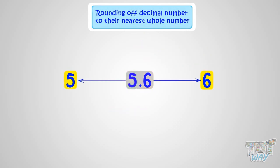And if we have to round it to the nearest whole number, there are two options: either round it down to 5 and remove the decimal portion, or round it up to the next whole number, which is 6.